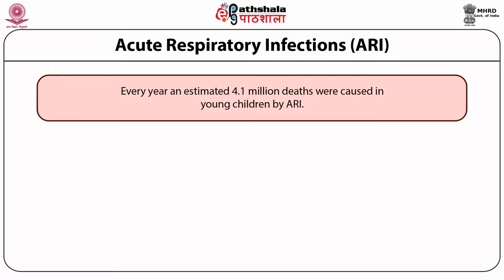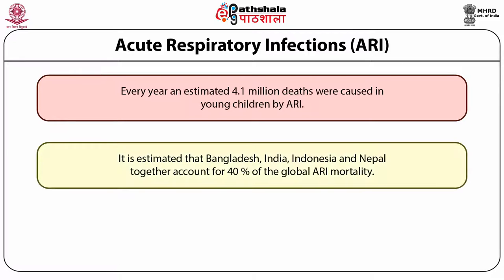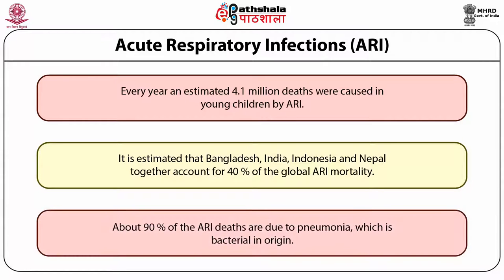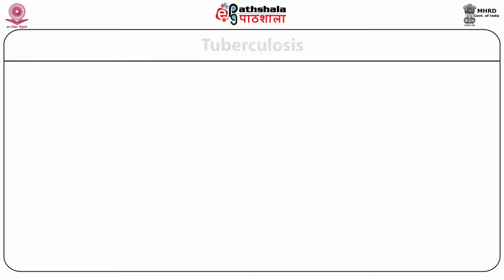Every year, an estimated 4.1 million deaths were caused in young children by acute respiratory infection (ARI). It is estimated that Bangladesh, India, Indonesia and Nepal together account for 40% of the global ARI mortality. About 90% of ARI deaths are due to pneumonia, which is bacterial in origin.